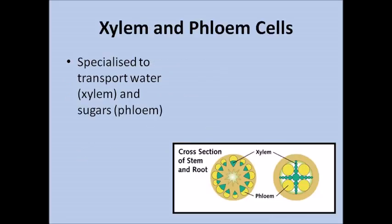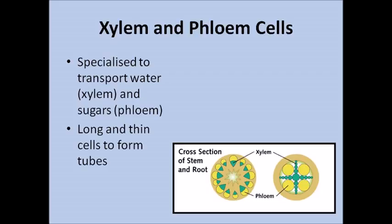Xylem and phloem cells are in plants and are specialised to transport water and sugars. Xylem transports water and phloem transports sugar. One way to remember this is that xylem starts with an X and water starts with a W — they're close together in the alphabet. Xylem and phloem are long and thin, forming tubes much like the blood vessels in our bodies.